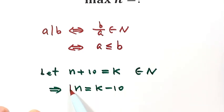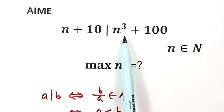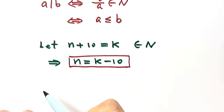So next, we're going to use this expression to replace n in here. n to the third. So now let's write down this part. So here, n to the third plus 100.